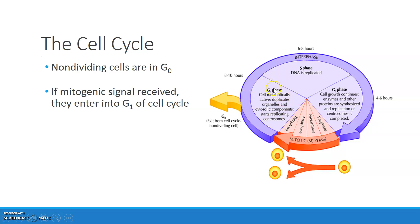The first step of the cell cycle is known as G1, or the gap one phase. In G1, the cell is technically metabolically active, and it's duplicating or doubling its organelles and cytosolic components in preparation for turning one cell into two. Because you need to make twice as many molecules and twice as many organelles in order to have the material to ultimately create two cells via the cell cycle.